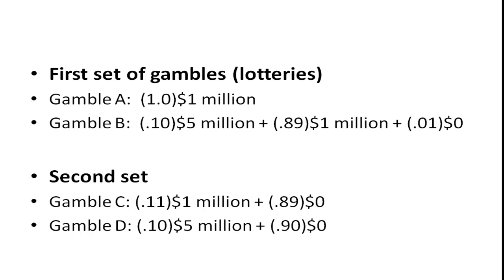Let's look at the second set between C and D. Here, there's an 11% chance of getting a million dollars and an 89% chance of getting nothing. In gamble D, there's a 10% chance of getting 5 million, plus a 90% chance of getting nothing. Again, think about your choices.